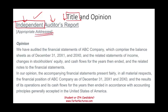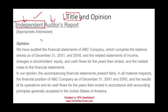The second component is the addressee — who the report is addressed to. For public companies, it's usually addressed to the board of directors or shareholders. For private companies, it's addressed to the board of directors or the owners themselves, not management. The key point is that we are not reporting to management; we are reporting to the owners who hired us. Therefore, the report is addressed to the owners — usually the board of directors.